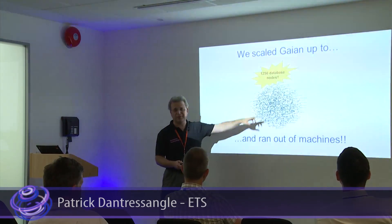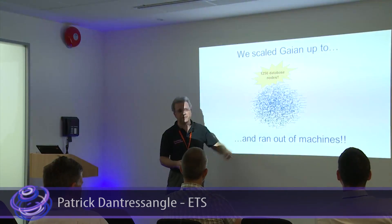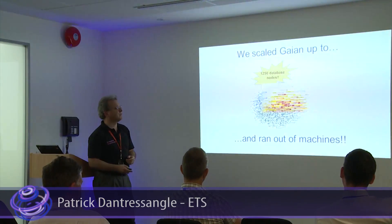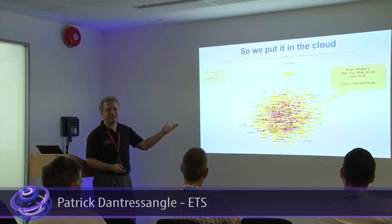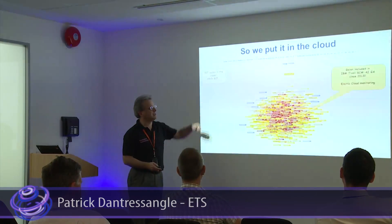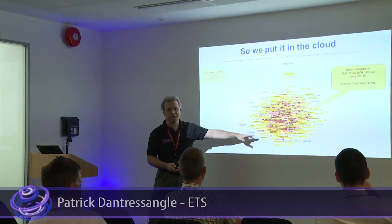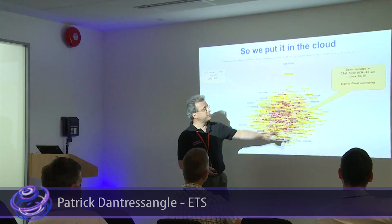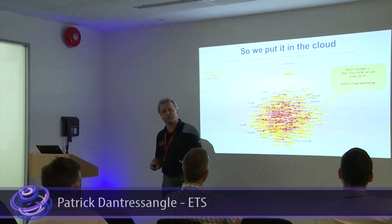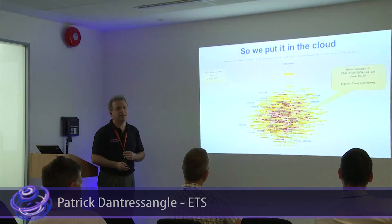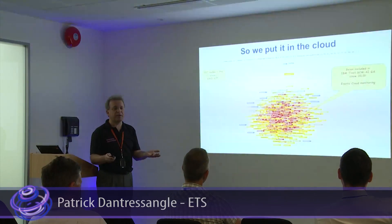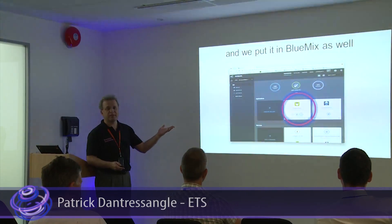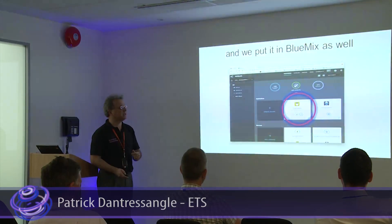With 1,250 Gaian database nodes, you can query from all these nodes and get data from all the others. We ran out of machines, so we put it on the cloud — we did that on Amazon and SCP. We worked with Tivoli and they were quite pleased. They put that into a product called SCM Smart Cloud Monitoring since 2013, so Gaian is the underpinning of the cloud monitoring for Tivoli. We also put it in Bluemix and will be able to leverage that very soon.